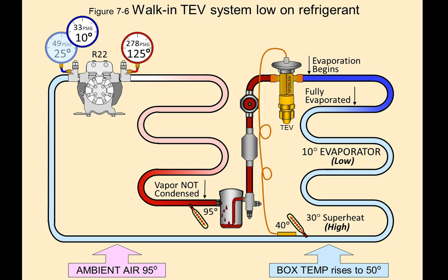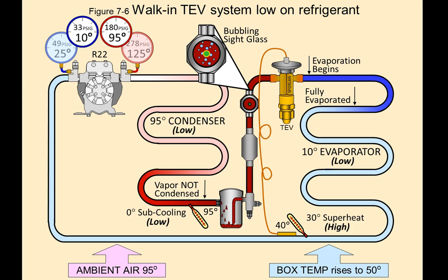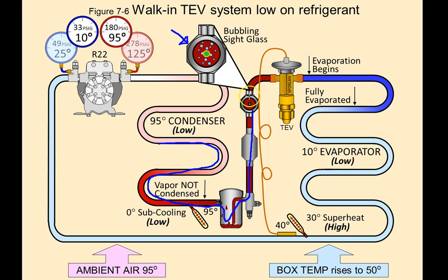On the condenser side, we have a lower pressure on the condensing side as well. Because there's not enough refrigerant, it pretty much blows through the condenser coil. Normally it would get backed up and begin sub-cooling, but because there's a lack of refrigerant, it doesn't get backed up. It blows through the condensing coil into the receiver, out of the receiver, and heads towards the TXV. You're going to see bubbles in the sight glass because it hasn't fully sub-cooled — it's still changing state from vapor to liquid.